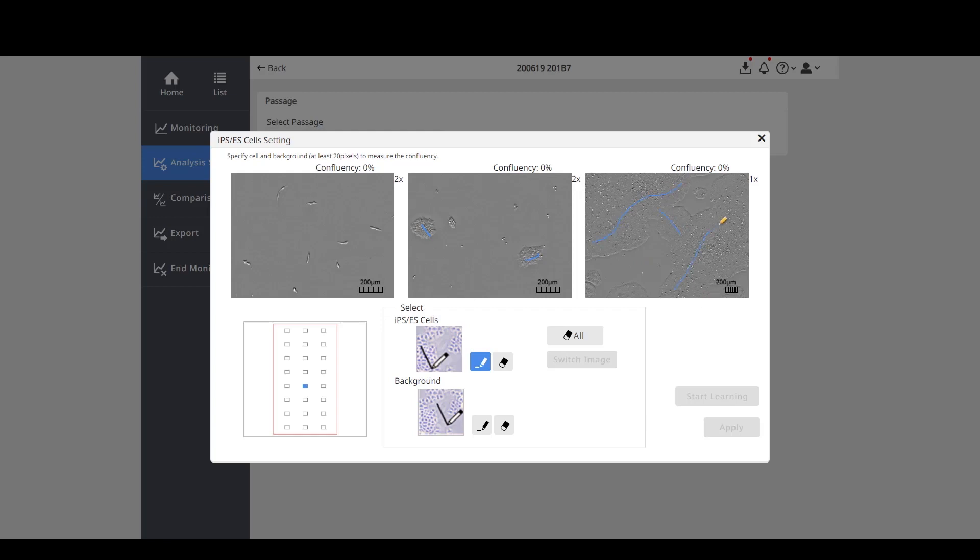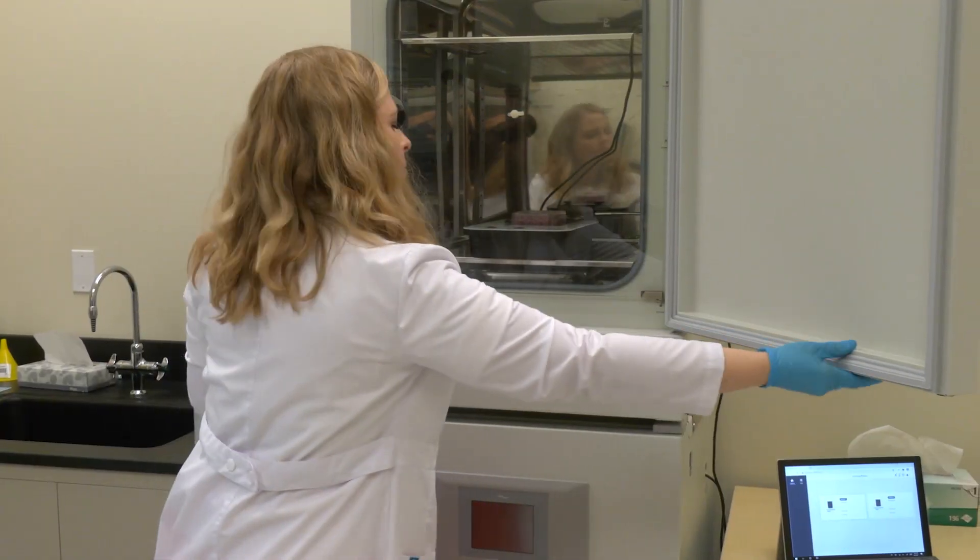And of course, the more you train, the more accurate your model becomes. The system is now ready to automatically analyze the cell cultures. Using these parameters, the system will count the number of cells and determine the confluency.